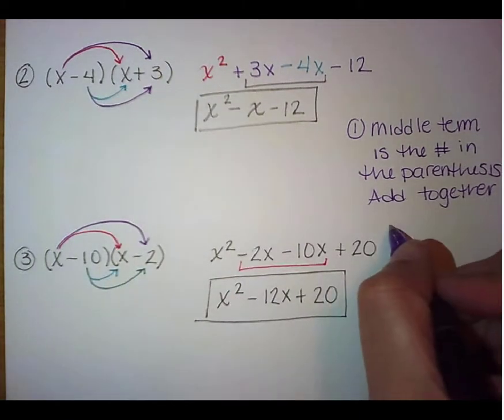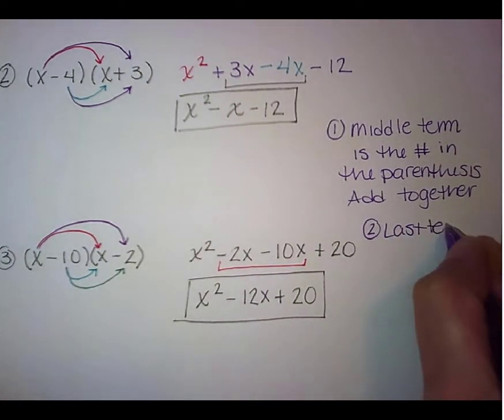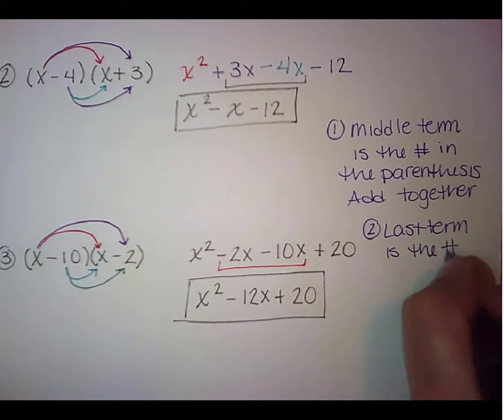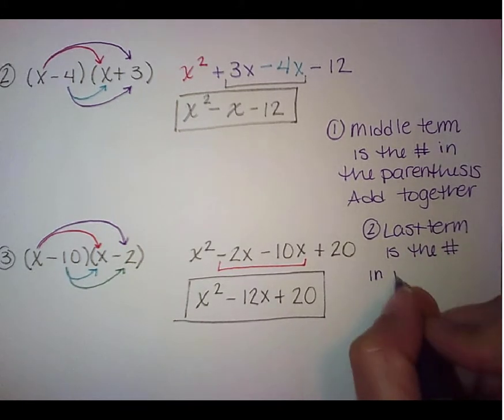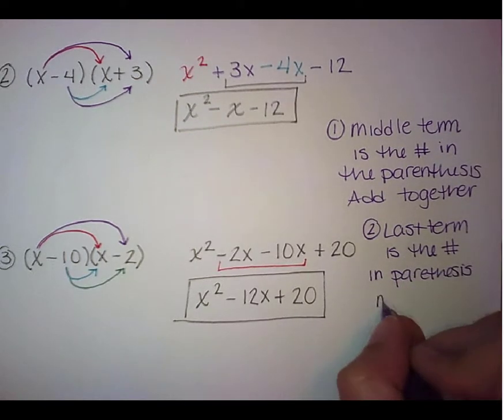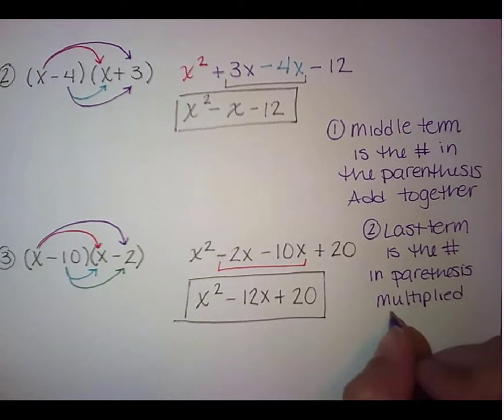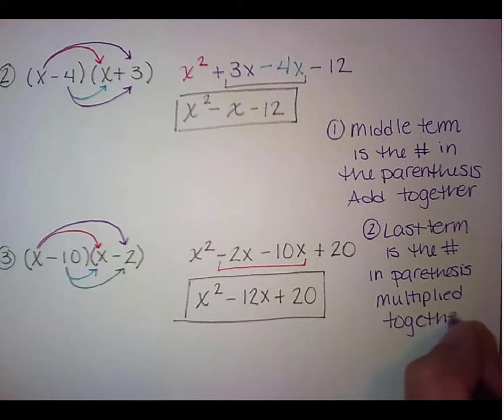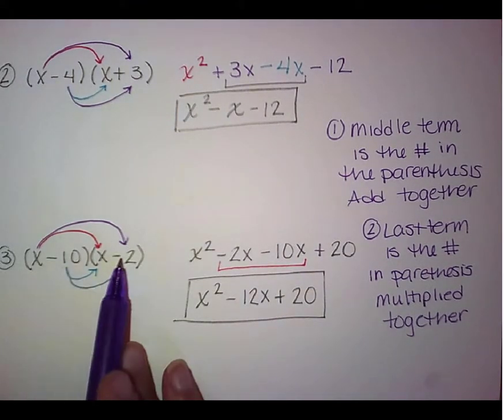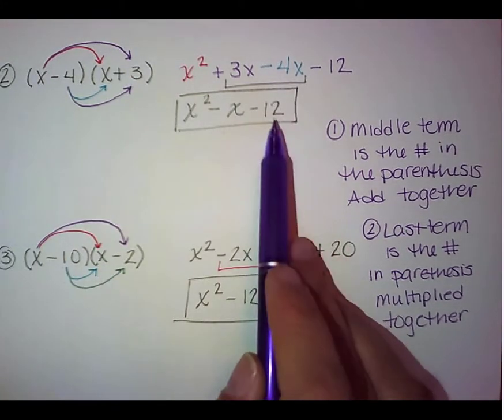So the last term is the numbers in the parentheses multiplied together. Okay, so that's that negative 10 times negative 2 which gave us a positive 20. That negative 4 times positive 3 that gave us a negative 12.